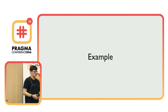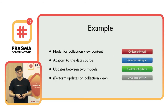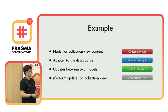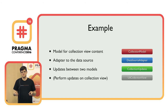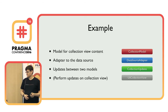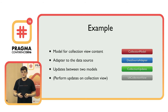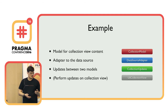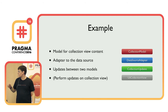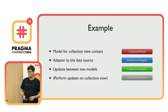The example is a library for collection views — something like collection tools. First we have a model containing collection view content, with notions of items, sections, cell identifiers (which are strings), and models. Then we have an adapter which adapts this model to a data source protocol. Third is a class that models the updates between two models, and the fourth is UICollectionView, which takes the updates applied to it by the collection updates class.